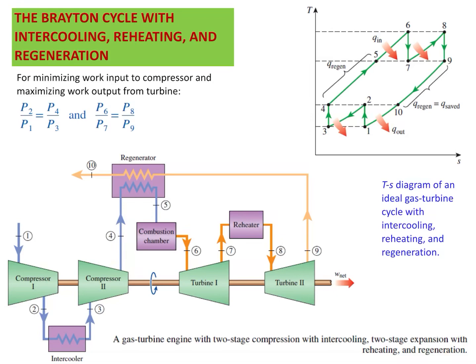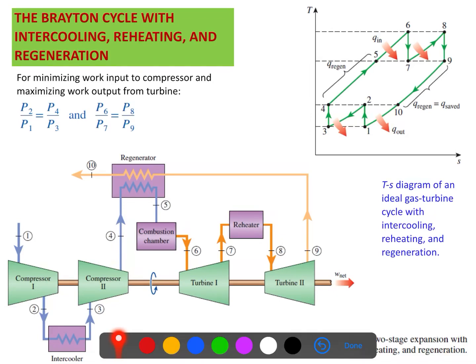We already discussed how the Brayton cycle works with intercooling, reheating, and regeneration. Now we'll try to understand the total process here. This is the overall physical schematic of the Brayton cycle system, and this is the T-S diagram. We will try to connect this schematic with this T-S diagram, which is really important to understand.